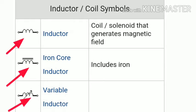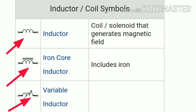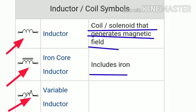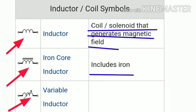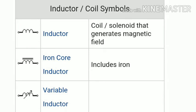The next symbols are the inductor, iron core inductor, and variable inductor. The inductor is used for a coil or solenoid that generates a magnetic field. The iron core inductor includes an iron core and is used for solenoids to generate a magnetic field. The inductor may also be a variable inductor.